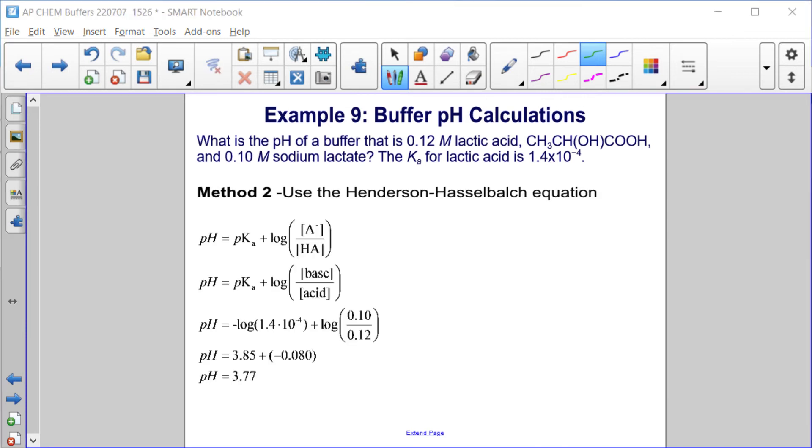But the second method is the method we've been using in this buffers section, and that is to use the Henderson-Hasselbalch equation, where pH equals pKa, or the minus log of the Ka, plus the log of the base, which in this case is the lactate, 0.1 molar, over the acid, which is the lactic acid, 0.12 molar. And in doing that, just a calculation here, we get the same pH, 3.77.